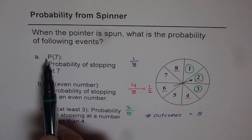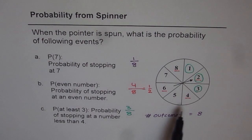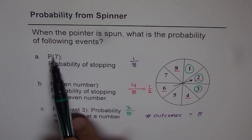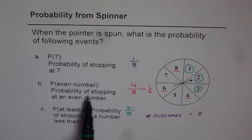If I write P within brackets 7, it means probability of stopping at 7. So that is how these notations are related. Even number: probability of stopping at an even number. At least 3: probability of stopping at a number less than 4, or 1, 2, or 3. So that is how we have to interpret and answer these questions.